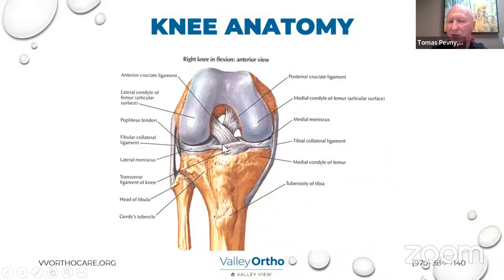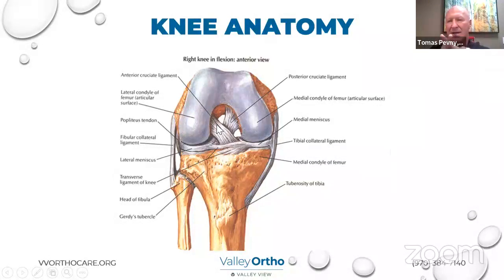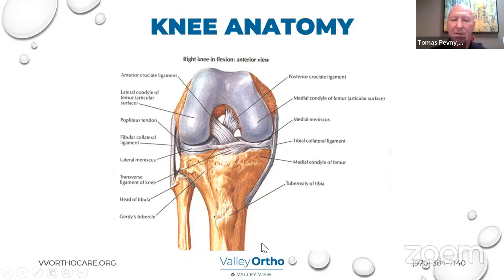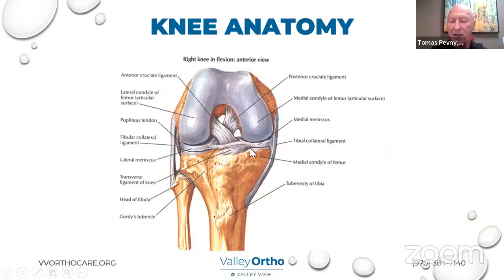The ones that really get all the attention are the cruciate ligaments. You've probably all heard of the ACL or anterior cruciate ligament. They're called cruciates because they cross. The ACL is anterior — in front of the PCL. It's smaller, not quite as strong, and injured much more frequently than the PCL. Its main function is to prevent the tibia, the lower bone in the knee, from coming forward on the femur. That's why people get instability when they tear the ACL. So: four bones, four ligaments.